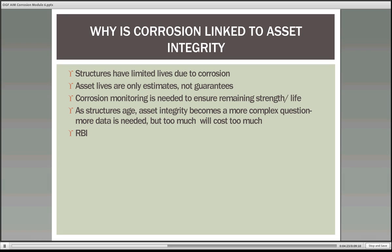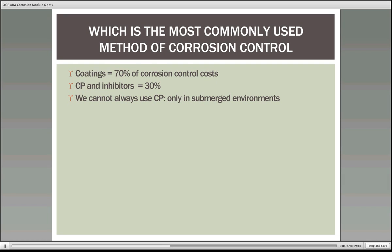Which is the most commonly used method of corrosion control? That's simple — coatings. We reckon around about 70% of corrosion control costs are down to the painting cycle. And remember, we're talking about the cost of surface preparation, applying the coatings, inspecting the application process, and testing the resultant coating. All of those things have to be done — that is the cost. The other 30% is cathodic protection and inhibitors.